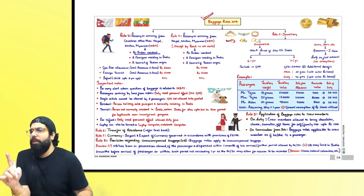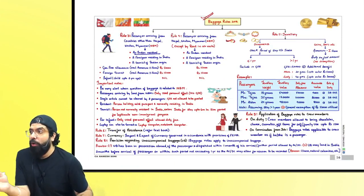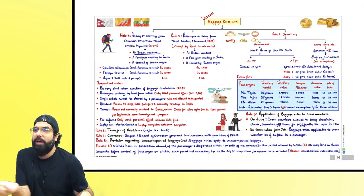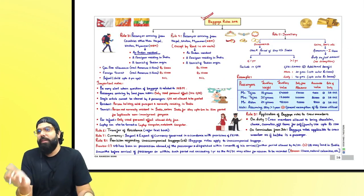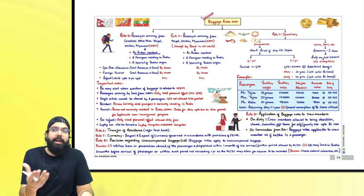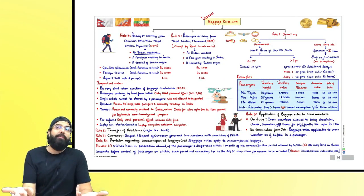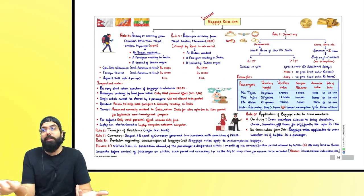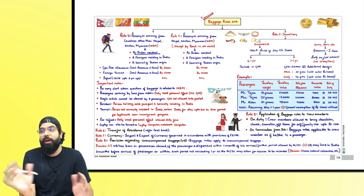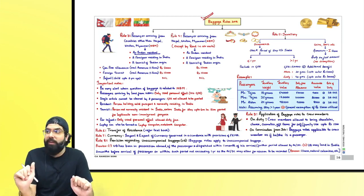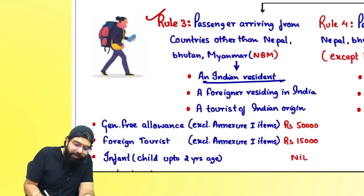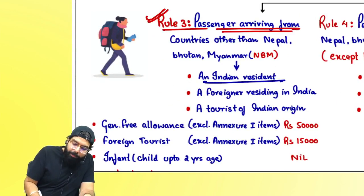Coming to baggage rules: rule 1 gives the name — baggage rules. Rule 2 gives definitions. The definition of personal effect is given; infant means a baby up to two years. These definitions are important.